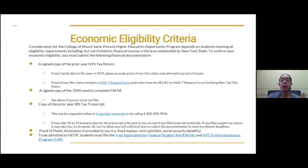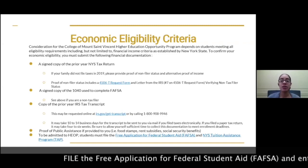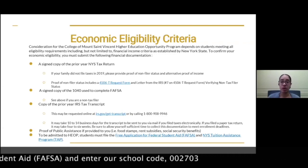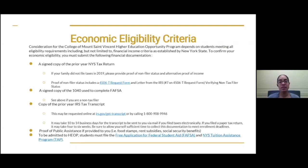Aside from looking at your academics, we are going to screen you financially to see if you meet the economic requirements for the HEOP program. You can take a screenshot of the financial documents list so that you have this information ahead of time, because a lot of students we lose throughout the process because they don't submit these financial documents. If you meet the academic requirements but do not submit these financial documents, we cannot continue with the process. Please send these in as soon as the HEOP counselor requests them — we do have a specific number of spots for this program, and we want to make sure you get yours.